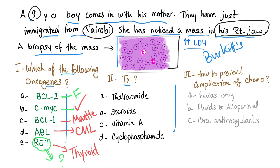What's the treatment of Burkitt's lymphoma? Burkitt's lymphoma is the most rapidly progressing tumor ever. So we should use chemotherapy — no steroids. How about thalidomide? Thalidomide is for multiple myeloma, so nope. Vitamin A is for AML subtype M3. Cyclophosphamide is the correct answer.